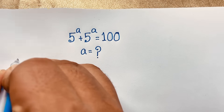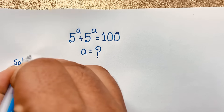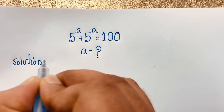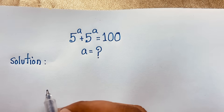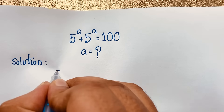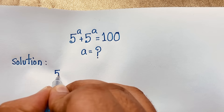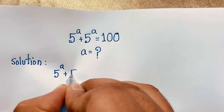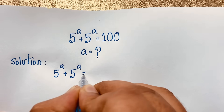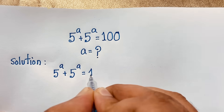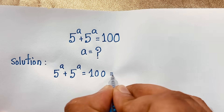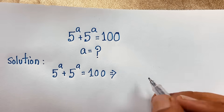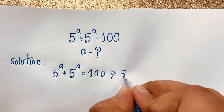So our math solution. Here our question: it will be 5 to the power A plus 5 to the power A is equal to 100. This is our question. So you can see, first of all here, 5 to the power A is common.